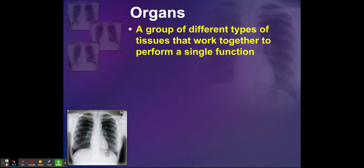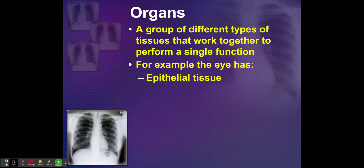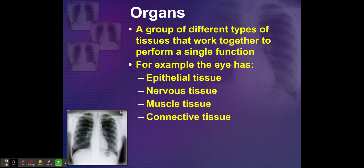Now we have organs. An organ is a group of different types of tissues that work together to perform a single function. For example, the eye is an organ, and it has epithelial tissue, nervous tissue, muscle tissue, and connective tissue.